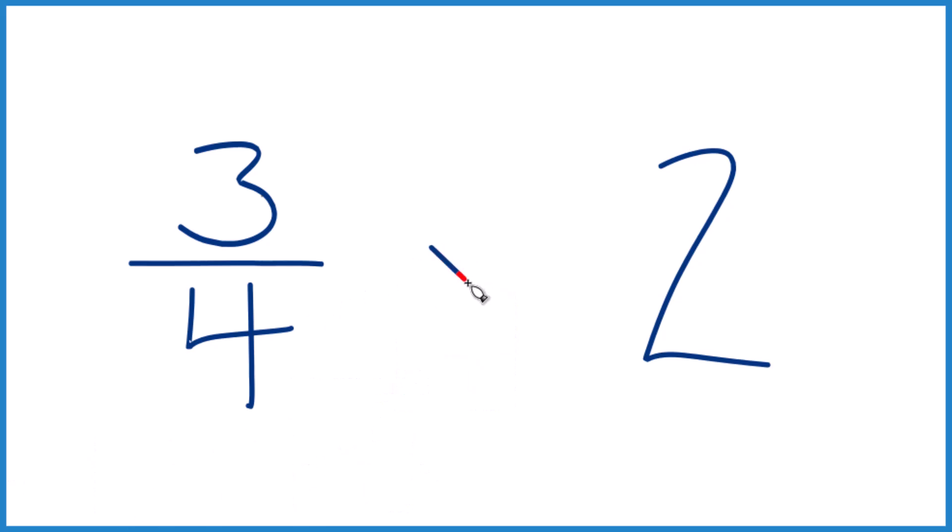So, three-fourths times two. And that two there, I like to take that and call it two over one. It's still two, because we're just dividing by one.